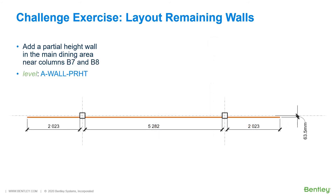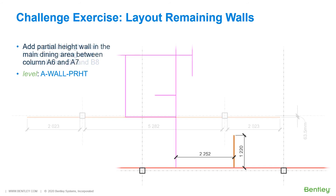As shown here, you will add a single line partial height wall in the main dining area near columns B7 and B8. As shown here, you will add a single line partial height wall in the main dining area near columns A6 and A7.